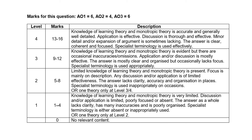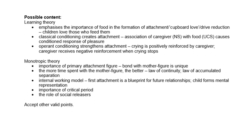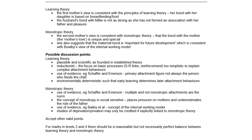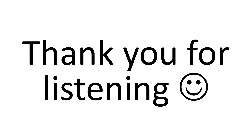For marks in levels three and four, the mark scheme states there should be a reasonable but not necessarily perfect balance between learning theory and monotropic theory. This is why it's really important to plan before writing. Try to achieve an equal-ish balance between both theories, as the question wants you to discuss both. Don't go into so much detail about one that you run out of time for the other, or you'll struggle to reach the higher bands. Thank you for listening, and best of luck with the rest of your revision.